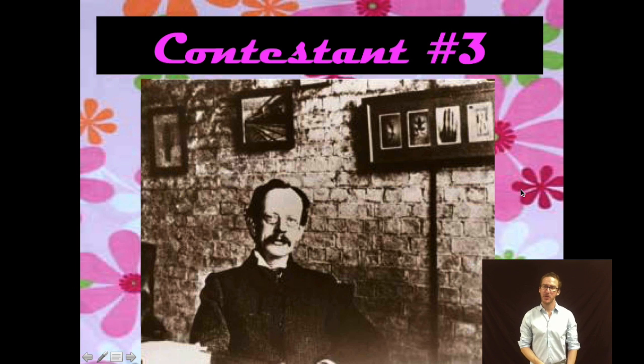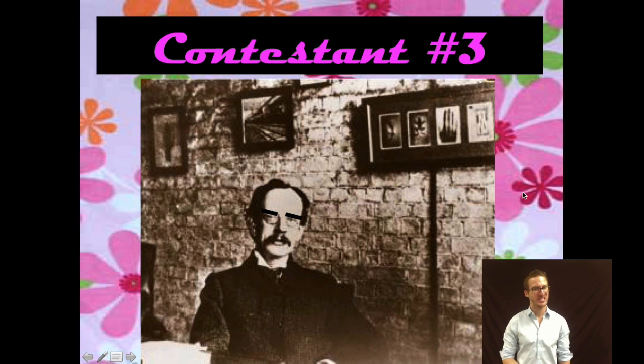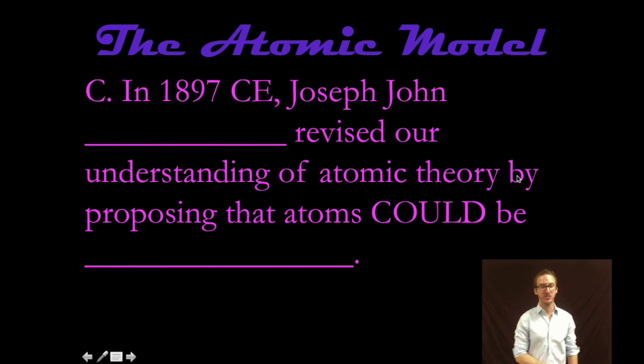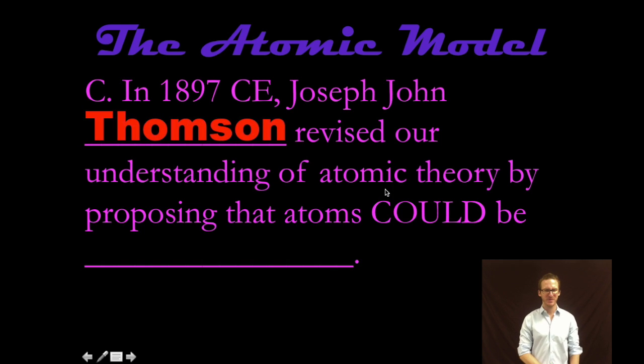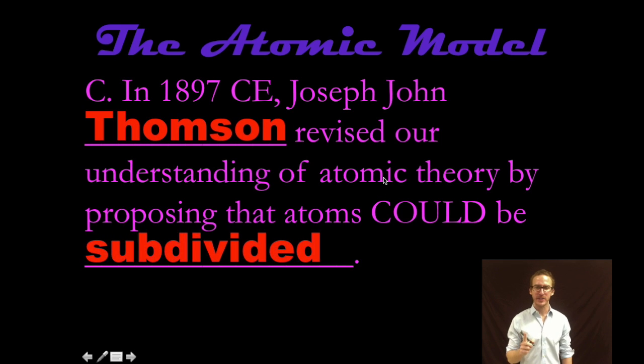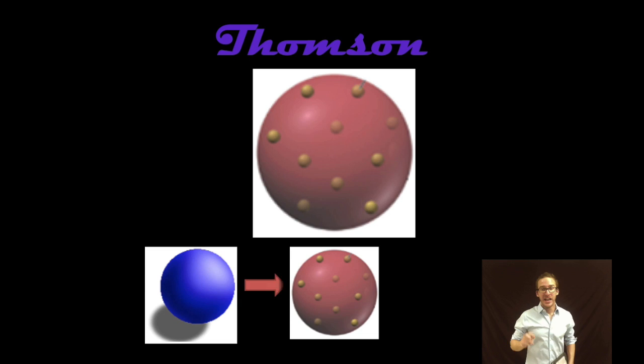This brings us to contestant number three, likes to spend long nights in the lab. I like to call him JJ, but you can call him Joseph John. That's right, Thompson blew everybody's mind away when he said whoa people, you can actually get smaller than the atom. He proposed this thrilling model of the atom, known as the plum pudding model for those folks in the British Isles, or for those of us on the winning side of the pond, call it the cookie dough model. Go USA!